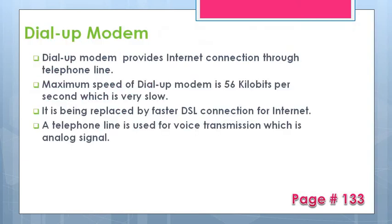First of all, we are going to discuss the dial-up modem. Dial-up modem provides internet connection through telephone lines. The maximum speed of a dial-up modem is 56 kilobits per second, which is very slow. It is being replaced by the faster DSL internet connection.